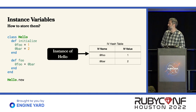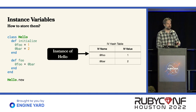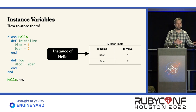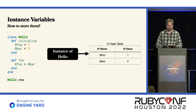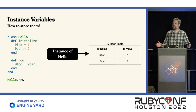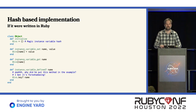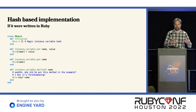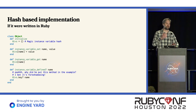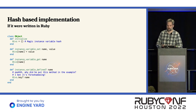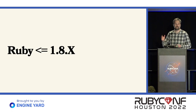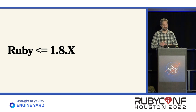We could imagine implementing it something like this where we just have that hash table associated with all of our instances. When you write something, it writes to the hash table. When you read something, it reads from the hash table. All of this seems pretty easy to implement if we understand how hash tables work. And in fact, this is how instance variables were implemented in Ruby 1.8 and earlier.